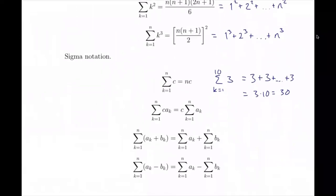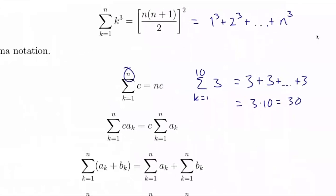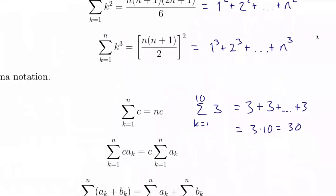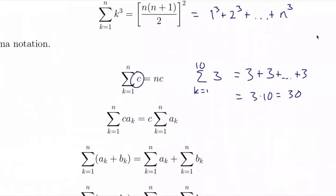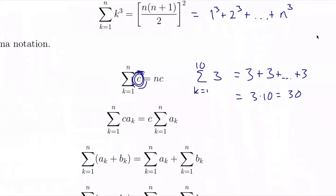Sigma notation has a running index variable k that starts at a lower value and ends at an upper value. A lot of times the upper limit is n and we take the limit as n goes to infinity. If c is a constant, plugging in any value of k gives c every time, and adding it n times gives n times c. So the sum from k equals 1 to n of c equals nc.